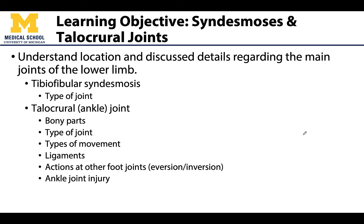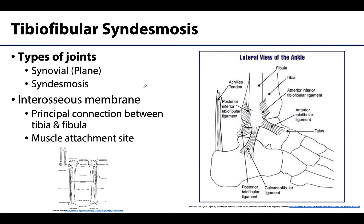Our good friend the syndesmosis is going to make a guest appearance here. Recall that, like what we had with the radius and the ulna, there are going to be very similar structures between the tibia and the fibula. However, we don't have the rotation that occurs with pronation and supination here, so there's not as much movement — the joints here play more of a functional role in stability. There are three different places where the tibia and fibula will articulate.